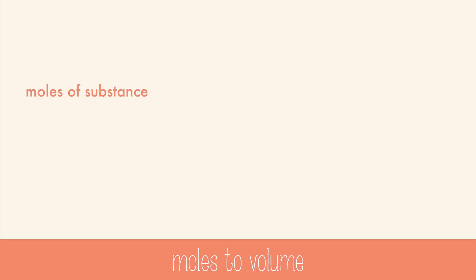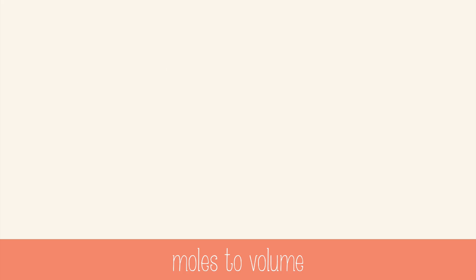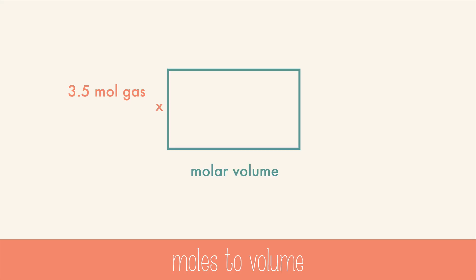At STP, a mole of any gas occupies a volume of 22.4 liters. So to go from moles of a substance to the volume in liters, use molar volume at STP, which is 22.4 liters per mole. You don't need molar mass at all, because any gas at STP will occupy the same volume. If you have 3.5 moles of a gas, use the molar volume with moles on the bottom to convert to liters, and you get 78 liters of gas.